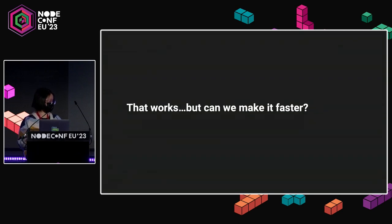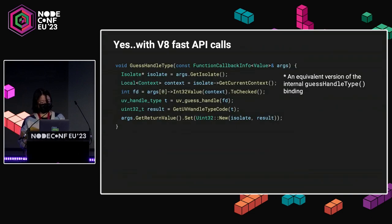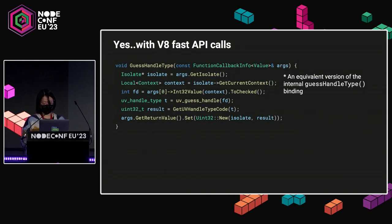So that is basically how synchronous bindings in Node are implemented so far. But is there a better way to do this? Is there a way to make it faster? Well, the answer is yes. There is a new V8 feature called fast API calls that can help us speed up the invocation from JavaScript to C++.